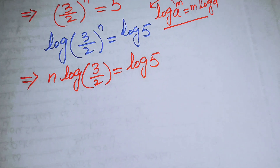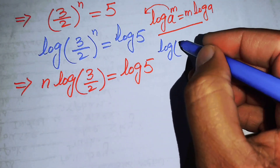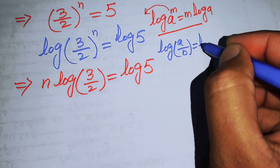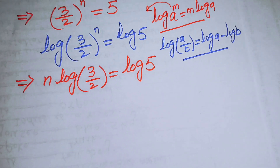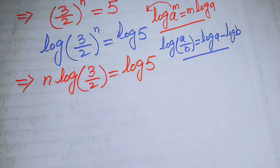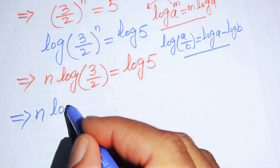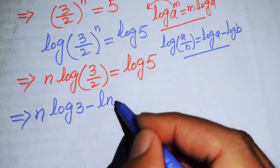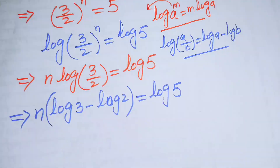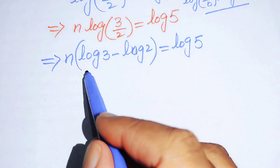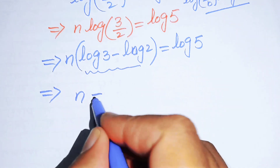We apply the logarithm quotient rule: log(a/b) = log a − log b. Applying this to the left-hand side gives us n × (log 3 − log 2) = log 5. We then isolate n by moving all terms involving log to the right-hand side, so n = log 5 / (log 3 − log 2).